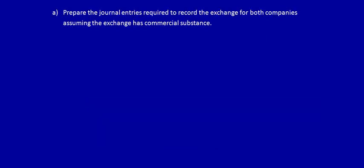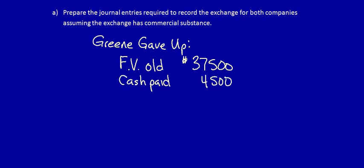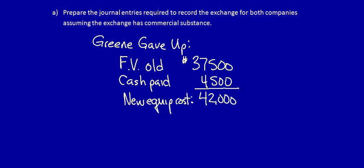Let's calculate it. Green Corp has given up the fair value of the old equipment — that's $37,500. It's the fair value of the asset given up, which is determinable, so it must be used. We've got to add in the cash paid, $4,500, because it is part of what the company had to give up in order to get the new equipment. In other words, they gave up not only their equipment but also some of their cash. The cost of the new equipment is therefore $42,000.